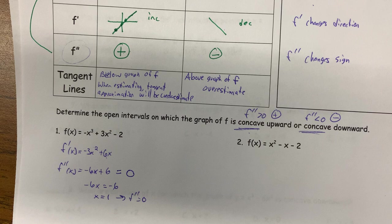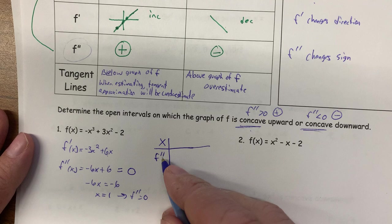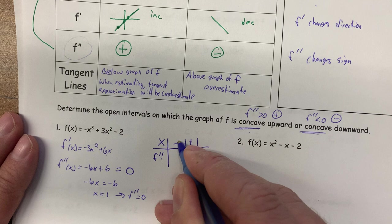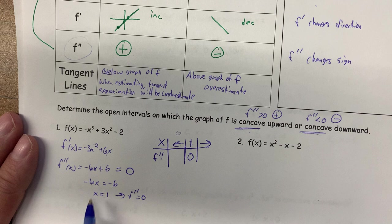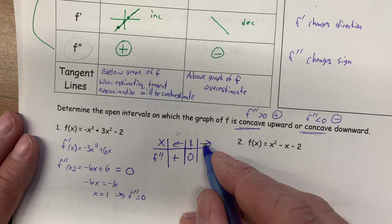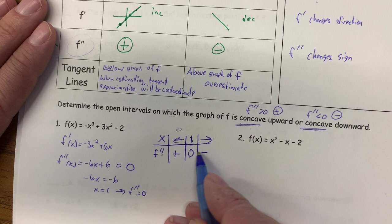We want to know when the function is concave up or concave down — that's like asking when is the second derivative above 0 versus below 0. We make a sign chart just like we did with the first derivative by finding where the second derivative is 0. Solving, we get x equals 1. This is where f-prime-prime equals 0. We put x equals 1 on our sign chart and test a point to the left and to the right — we're looking at the sign of f-prime-prime.